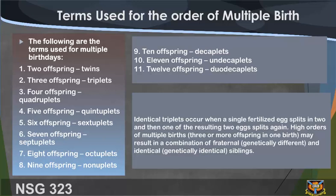The terms used for the order of multiple births are: one — two offspring: twins; two — three offspring: triplets; three — four offspring: quadruplets; four — five offspring: quintuplets; five — six offspring: sextuplets; six — seven offspring: septuplets; seven — eight offspring: octuplets; eight — nine offspring: nonuplets; nine — ten offspring: decaplets; ten — eleven offspring: undecaplets; eleven — twelve offspring: dodecaplets.